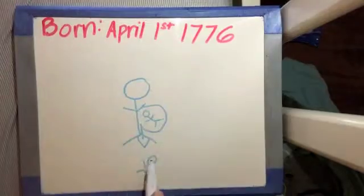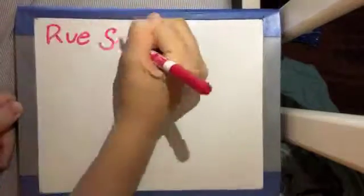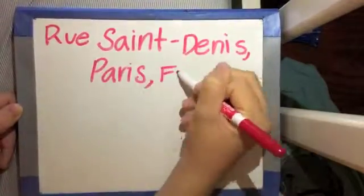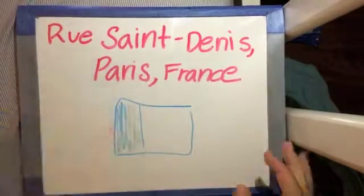Sophie Germain was born on April 1st, 1776. She was born in Rue Saint-Denis, Paris, France.